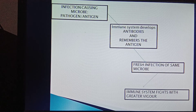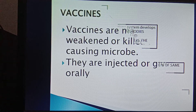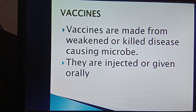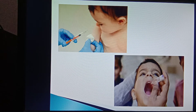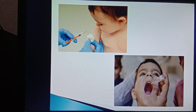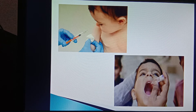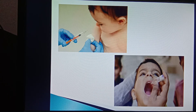Vaccines also use this principle. Vaccines are made from weakened or killed microorganisms. When these weakened or killed microorganisms enter our body, our body develops antibodies against them and also remembers the microorganism. When actual infection occurs, our body already has developed antibodies to fight this microbe, so we do not fall ill.